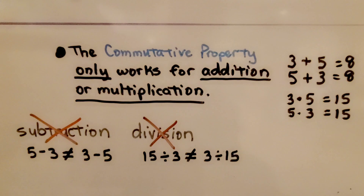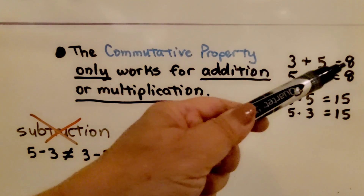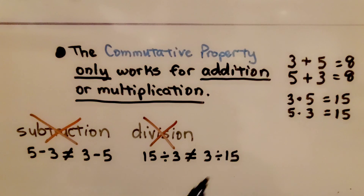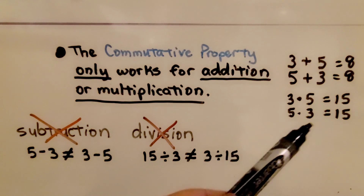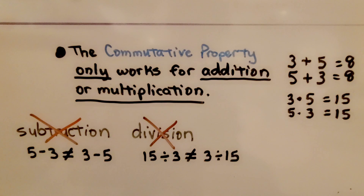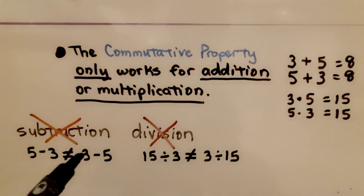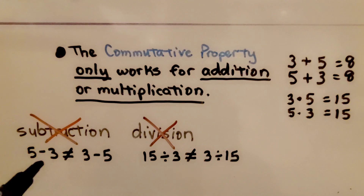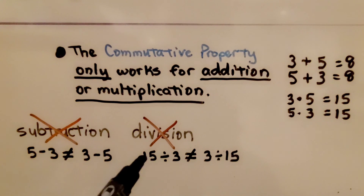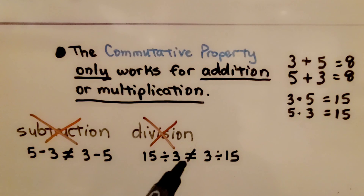The commutative property only works for addition or multiplication. We can add 3 plus 5 or 5 plus 3 and get the same sum, 8. We can multiply 3 times 5 or 5 times 3 and get the same product, 15. But for subtraction it won't work — 5 minus 3 does not equal 3 minus 5. And it doesn't work for division: 15 divided by 3 is not equal to 3 divided by 15.